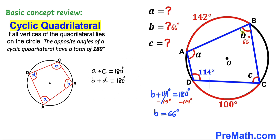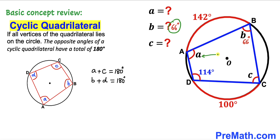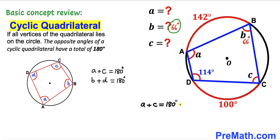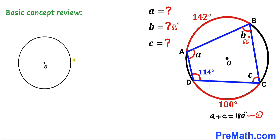So angle B turns out to be 66 degrees. Likewise, the sum of opposite interior angles A plus C must equal 180 degrees. I'll label this as equation number one, and now let's focus on the circle with center O.